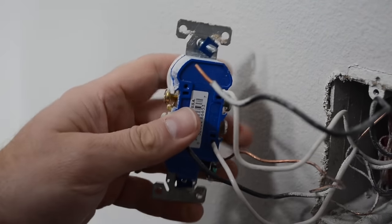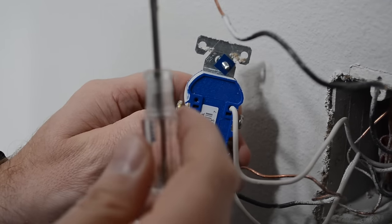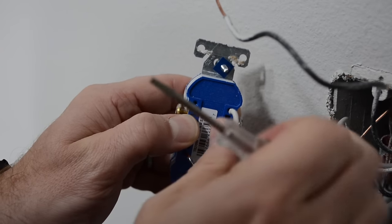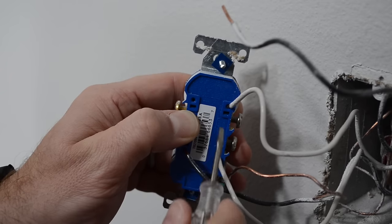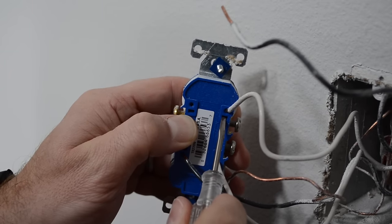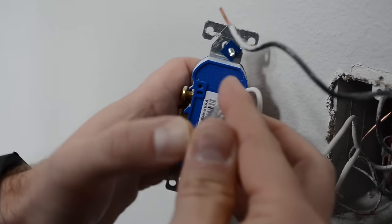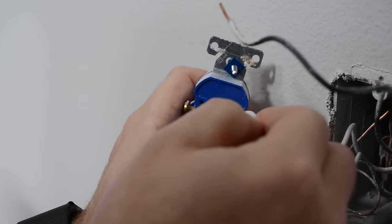Now I'll do it one time on the white wire just to show you that it's the same. What you do is you take the small screwdriver and stick it into the slot that is directly under the wire. You push that in and you can pull out the other wire.